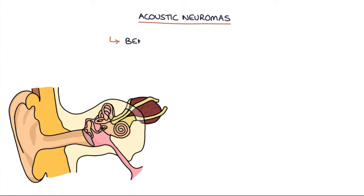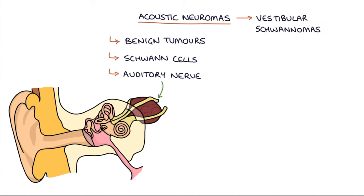Acoustic neuromas are benign tumours of the Schwann cells surrounding the auditory nerve, or the vestibular cochlear nerve, that innervates the inner ear. They're also called vestibular schwannomas as they originate from the Schwann cells.